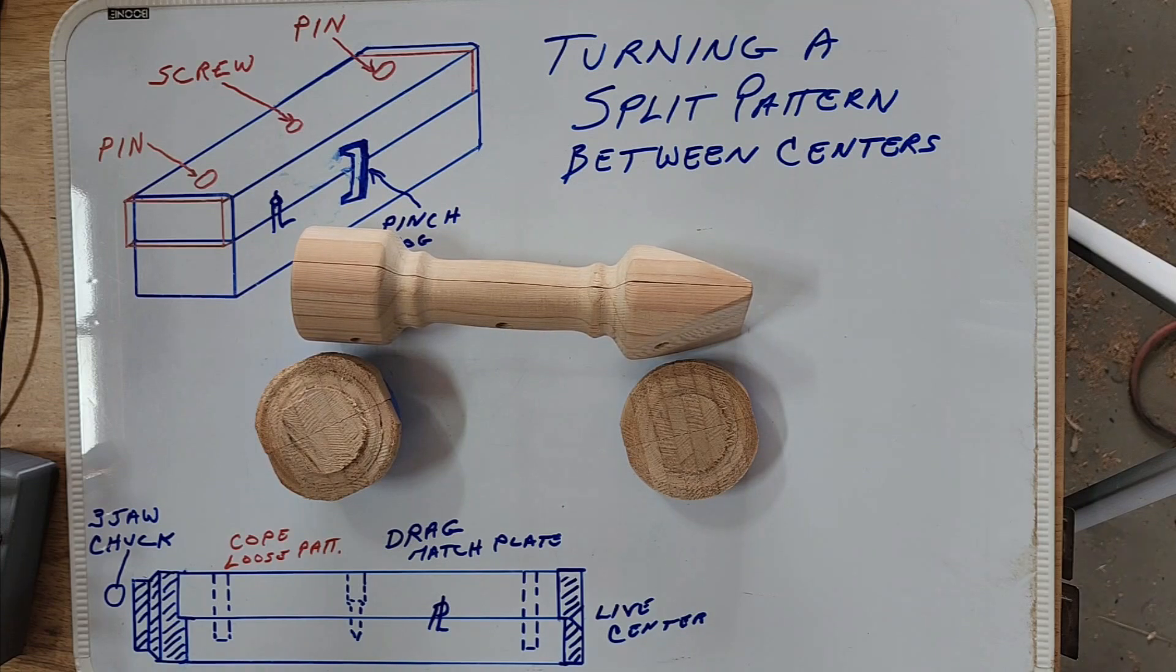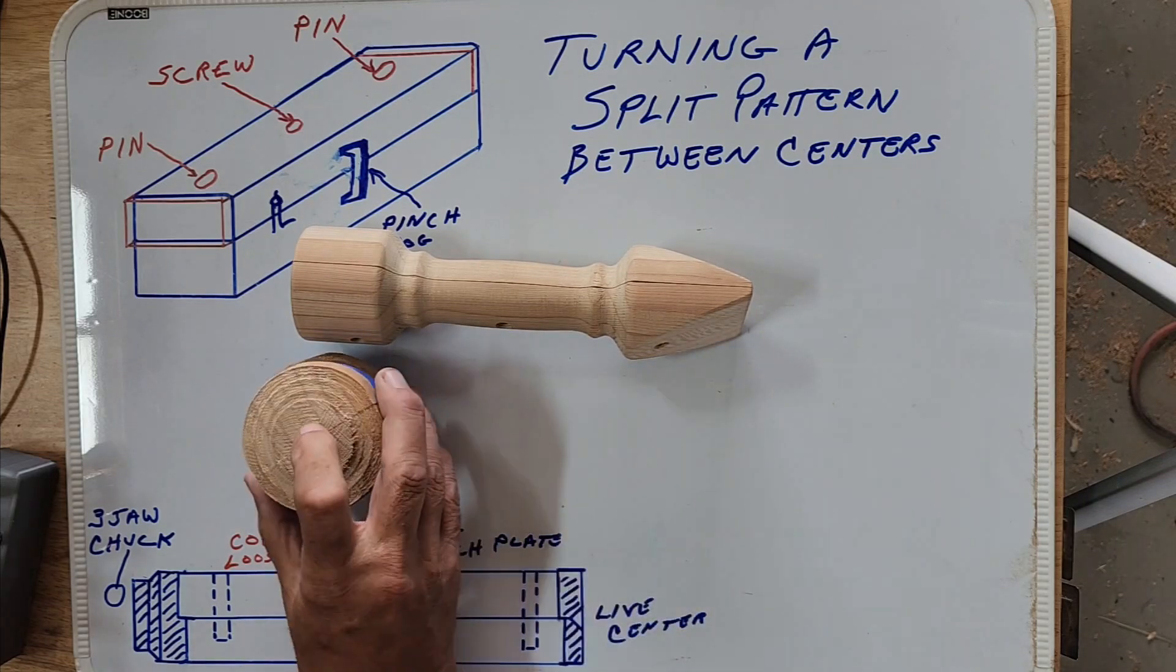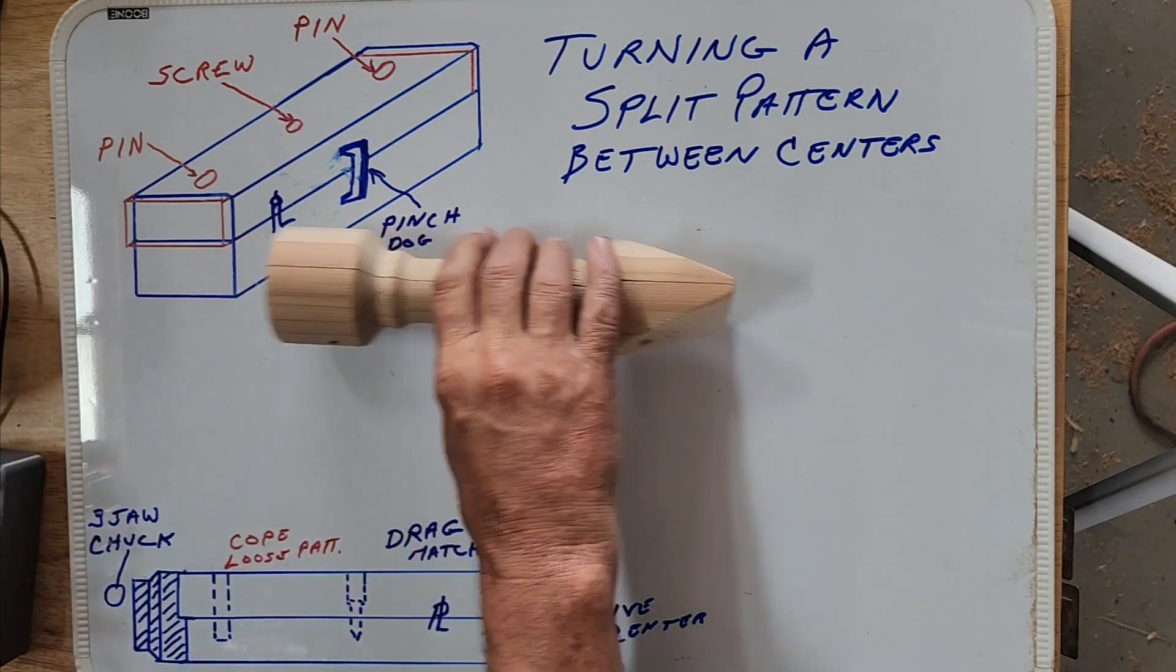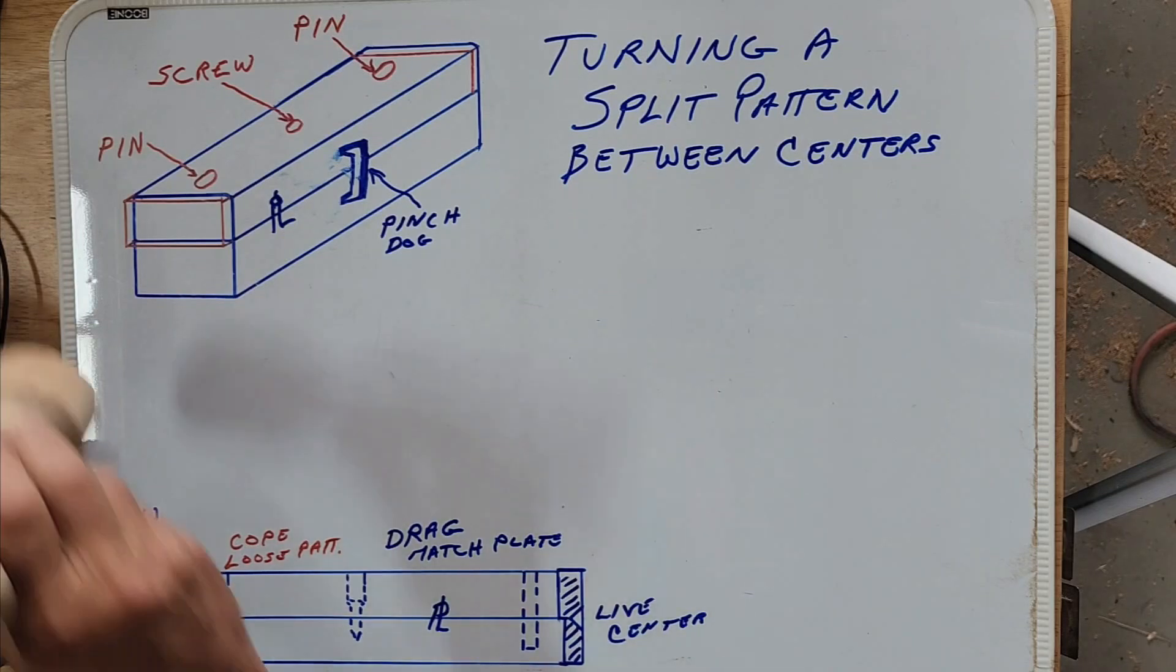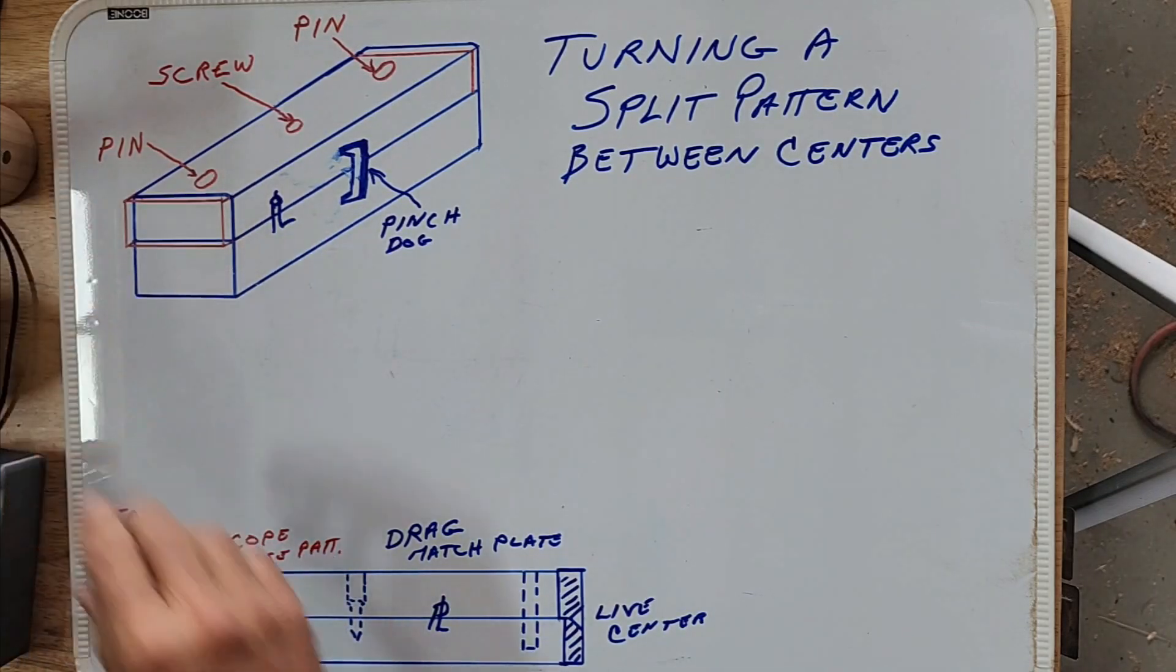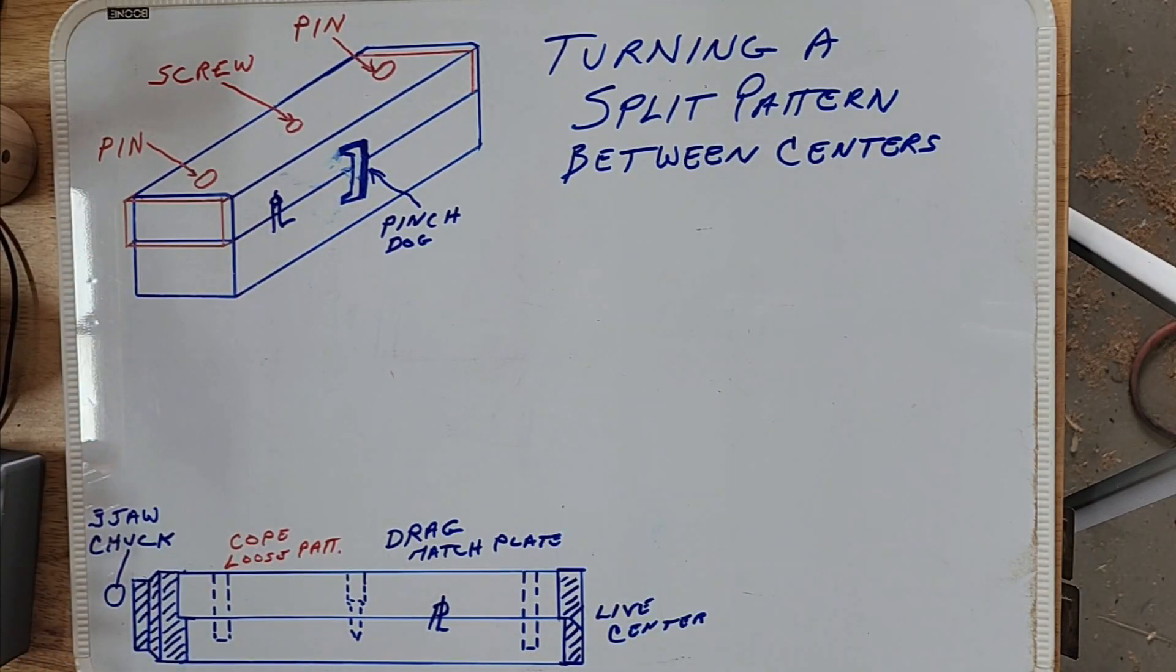To get to this point, the first thing you do when you're turning a split pattern between centers—I notice a lot of people glue their stock up and then put a piece of paper between the cope and drag halves of the pattern and then try to split it apart. To me that makes a big mess. I don't like it, never did. That's not the way you do things anyway.